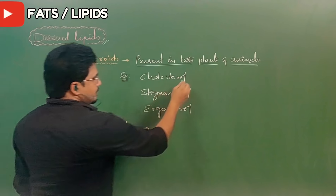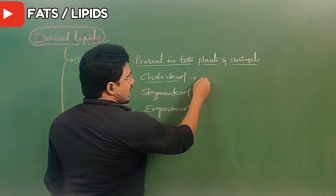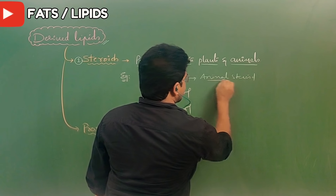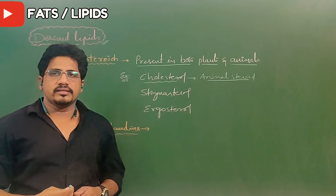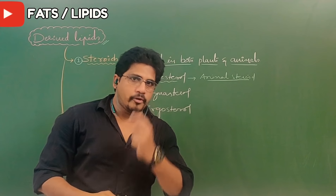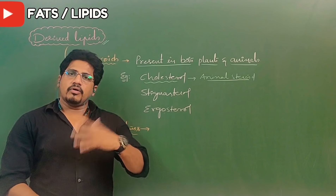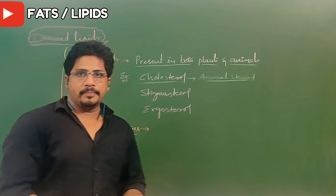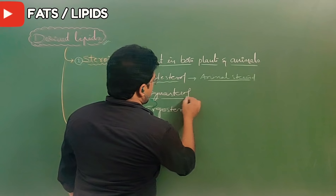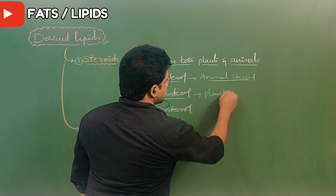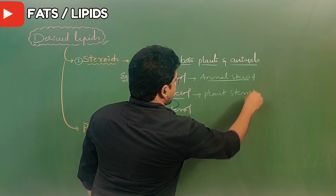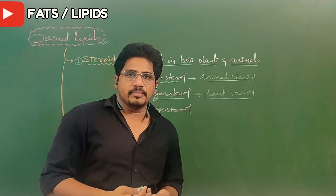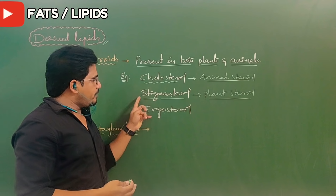In derived lipids, the first type is steroids. Steroids are present in both plants and animals. In animals they are called cholesterol — animal steroids — produced in the liver. Cholesterol is important but in excess it is bad for us, causing obesity and high blood pressure. Stigmosterol is called the plant steroid — plant cholesterol.